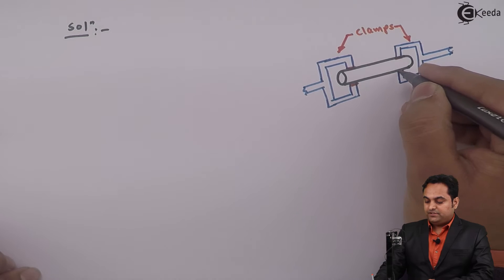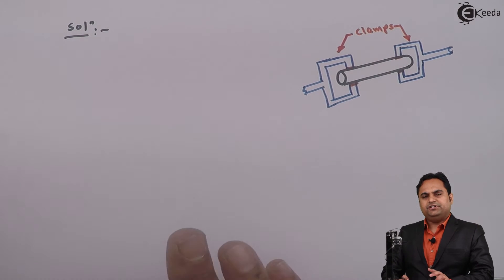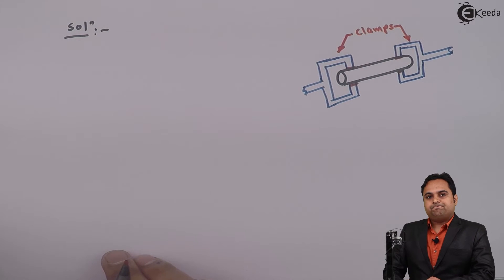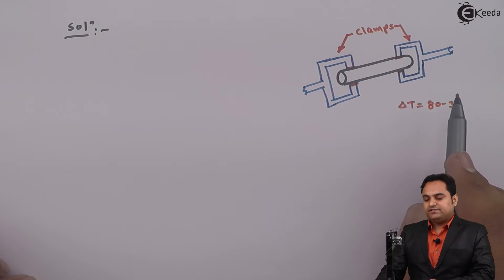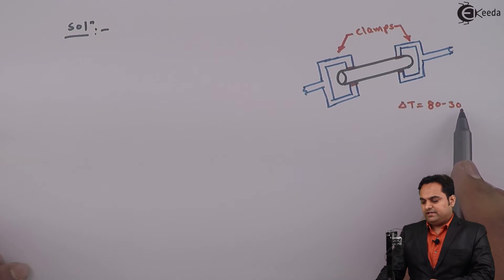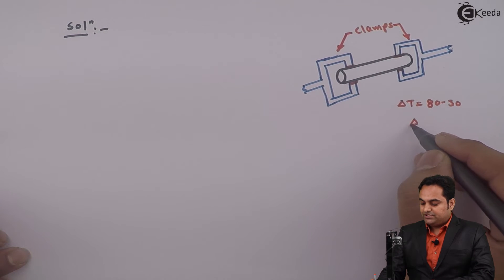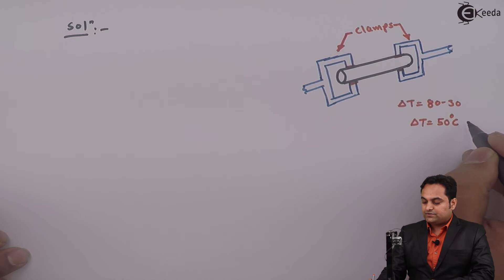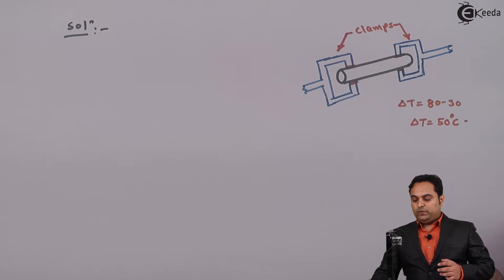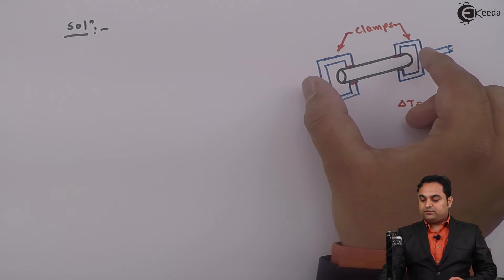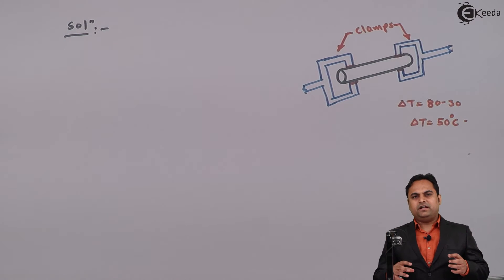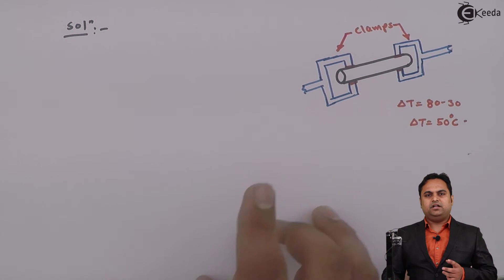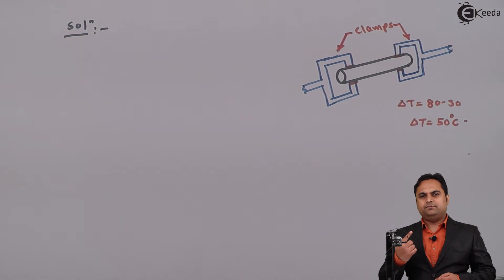What happens here is that first the steel rod is heated and then it is allowed to cool. The total temperature difference is 80 minus 30 degree Celsius — it is heated up to 80 degree Celsius and then allowed to cool to 30 degree Celsius, so the temperature change becomes 50 degree Celsius. When it is allowed to cool, this metal rod will try to contract. But because of the presence of the clamps, they will try to avoid that contraction, allowing the metal rod to only contract by 1 mm.